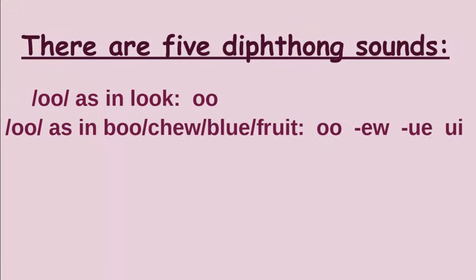My second special or unique sound is U as in boo, chew, blue, fruit. I have four representations for that U sound. OO is definitely the most common. Dash EW says U at the end of a word. Dash UE says U at the end of a word. UI also says U but it's not as commonly used.